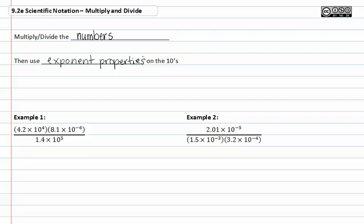Let's work on example one. Remember with order of operations, you can simplify the numerator or the denominator, but you need to do them separately first and then you can divide. So let's figure out what 4.2 times 8.1 is first. That comes out to be 34.02 times 10, working on the tens now, to the 4 plus negative 6. Notice that our bases match so our exponents are added. We're going to go ahead and divide that by 1.4 times 10 to the 5th. Since nothing is happening to the denominator at this point, I just rewrote it.